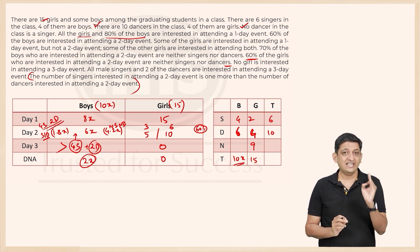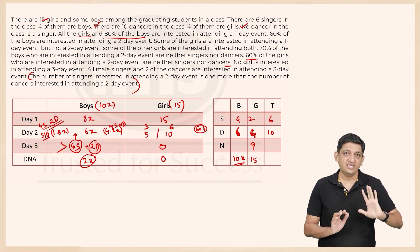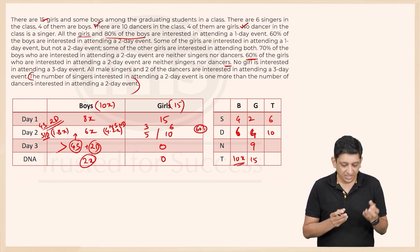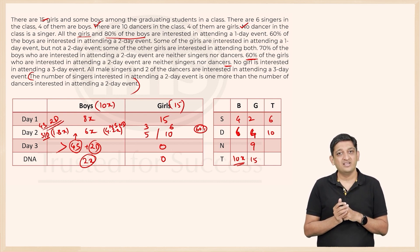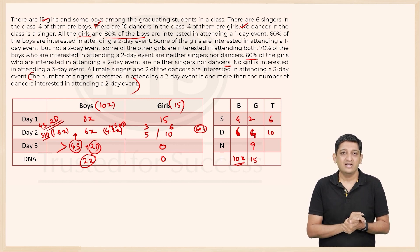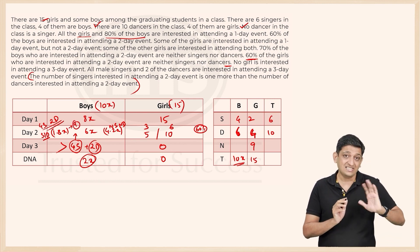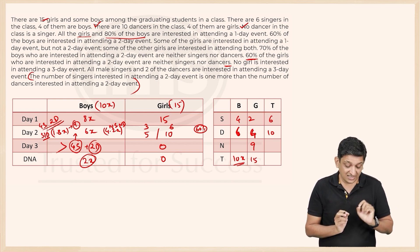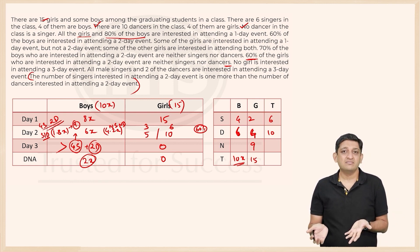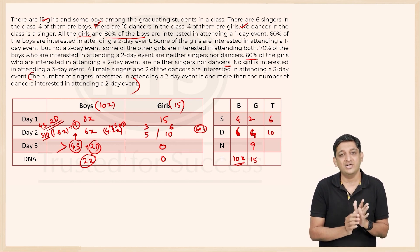The total number of boys is 10x, and 1.8x of those interested in the two-day event are singers or dancers. Since 1.8x must be an integer, x must be a multiple of 5. If x equals 5, then 9 boys who can sing or dance are interested in the two-day event. If x equals 10, that number rises to 18.